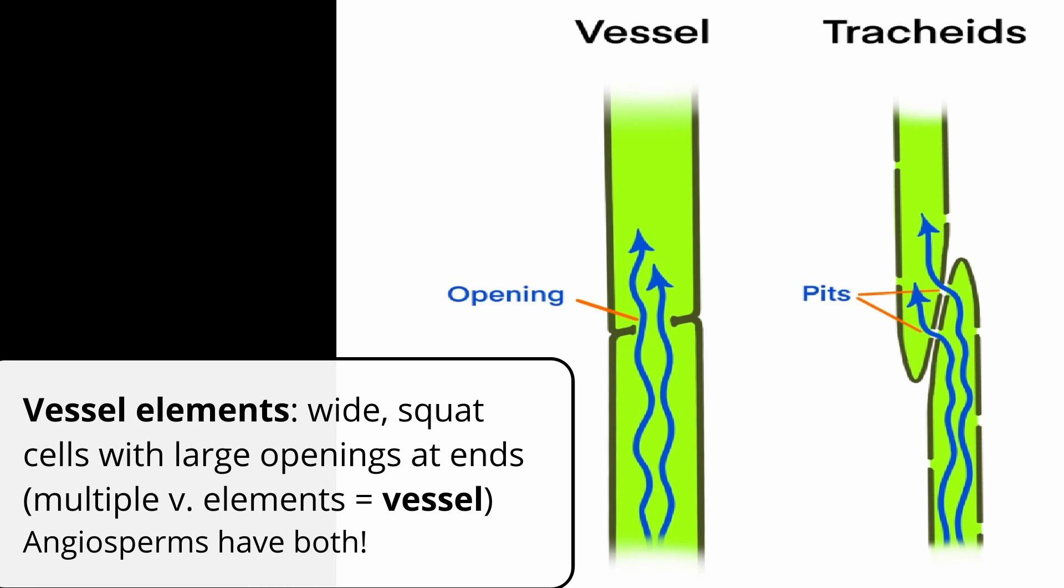This cell type is different because it's more on the squat side, it's shorter, and the pits are not on the sides of the cell, they're on the tips, so on the top and the bottom. That allows for a continuous column of water that just goes straight up through the plant.